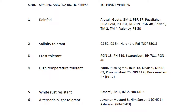Coming to varieties developed for different abiotic and biotic stresses: for rain-fed conditions — Aravalli, Geeta, Pusa Bahar, Pusa Bold, RH781, Shivani, Vaibhavi, RB50. For salinity tolerance — CS52, CS54, Narendra Rai. For frost tolerance — RGN13, Swarna Jyoti. For high temperature tolerance — Kranti, Pusa Agrani, Urvashi, Pusa Mustard 27, Pusa Mustard 25. For white rust resistance — Basanti, NRCDR2. For alternaria blight tolerance — Jawahar Mustard 3, Himsarsaw 1, and Ashirwad.